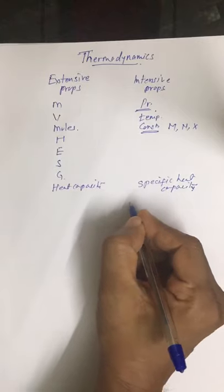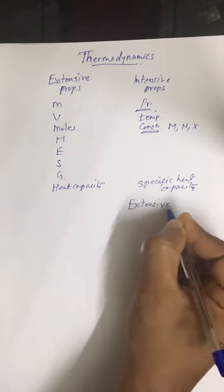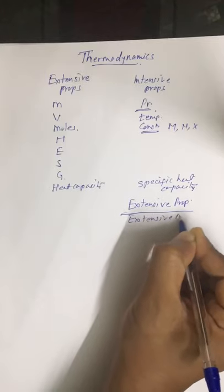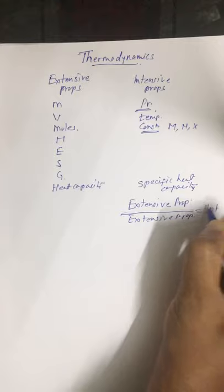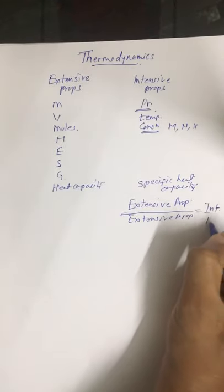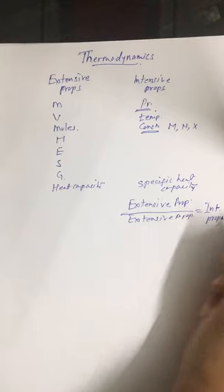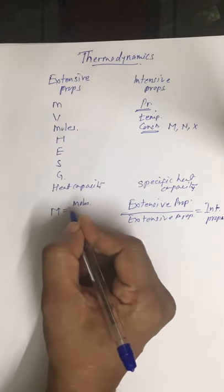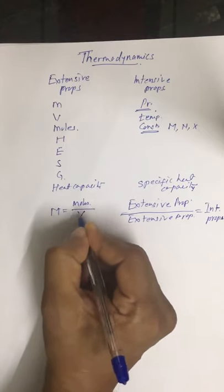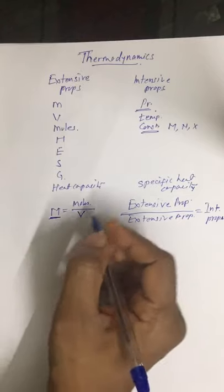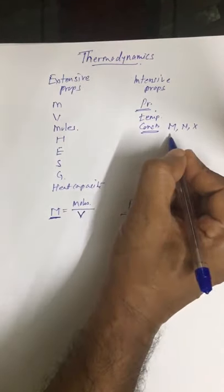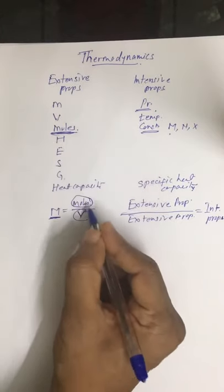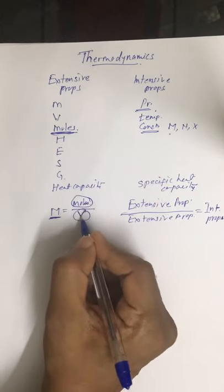One more important point: any extensive property divided by another extensive property becomes an intensive property. For example, molarity is given by number of moles divided by volume. Molarity is an intensive property, while moles and volume are both extensive properties.